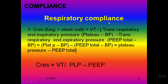So the total respiratory compliance formula: total compliance equals tidal volume over trans-respiratory pressure at end-inspiration minus trans-respiratory pressure at end-expiration — which means plateau pressure minus barometric pressure, minus PEEP minus barometric pressure. The final formula is: respiratory compliance equals tidal volume over plateau pressure minus PEEP.